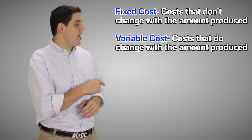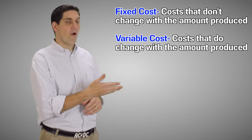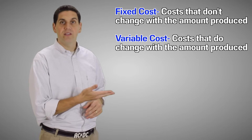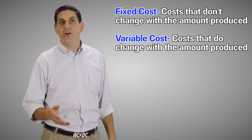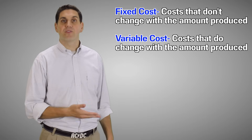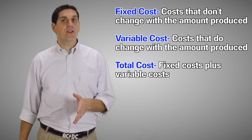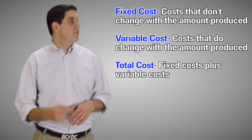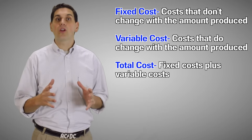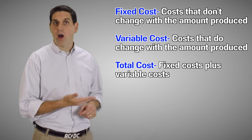Variable costs do change with the amount produced. If you produce more output, you're going to need more resources. Raw materials, labor, and electricity are all examples of variable resources, and that's variable costs. If there's only two types of costs — fixed and variable — then total costs must be fixed plus variable cost.